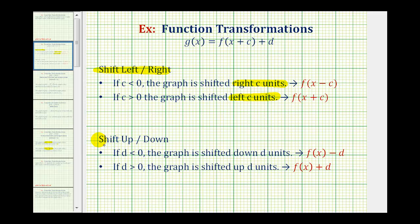Our graph is also shifted down four units. If d is negative or less than zero, the graph is shifted down d units. So in our case the graph is shifted down four units, meaning we'll have f of x minus d, and d is going to be negative four. If d is positive, the graph is shifted up d units, so we'd have f of x plus d.